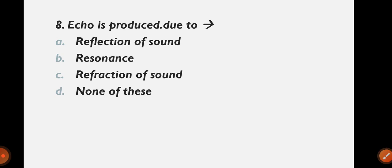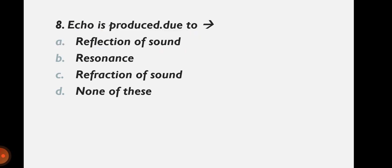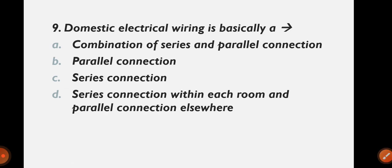Question 8: Echo is produced due to — reflection of sound, resonance, refraction of sound, or none of these? If you go to a quiet place and speak once, you hear it 3-4 times. The correct answer is option A: reflection of sound. Echo happens because of reflection of sound.